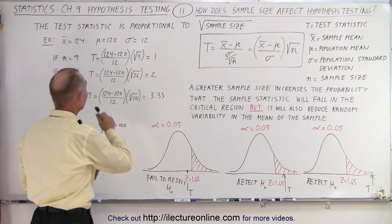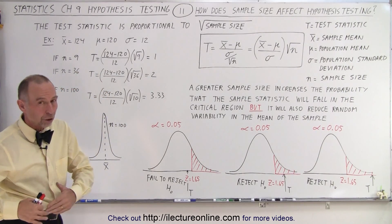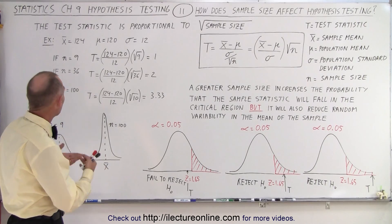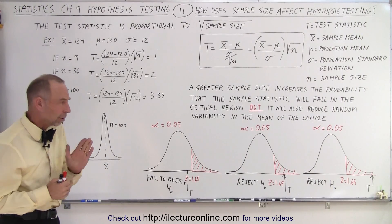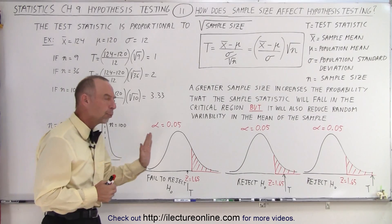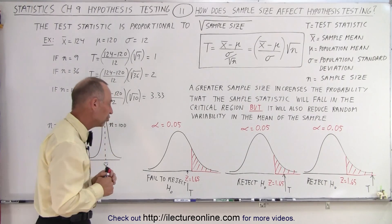So now we can see that the test statistic is in relationship to the square root of the sample size. In other words, the test statistic is proportional to the square root of the sample size. Which means that the larger you make the sample size, the larger you make the test statistic. Now when you make the test statistic larger, it will move to the right and is therefore more likely to fall in the critical region.